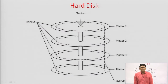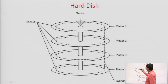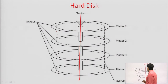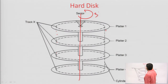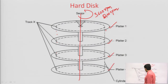This again is a diagram of the cylinder. Track number x of all platters and all surfaces form a virtual cylinder. The spindle will move either at 3600 RPM or 5400 RPM. These are the platters — the plates on which data will be stored.